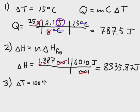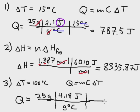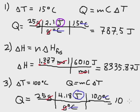Step three involves heating the water from zero degrees Celsius to 100 degrees Celsius. Again we use Q equals MC delta T. The mass is 25 grams, the specific heat capacity of liquid water is 4.18 joules per gram degree Celsius, and the change in temperature is 100 degrees. This gives us a total of 10,450 joules for this step.